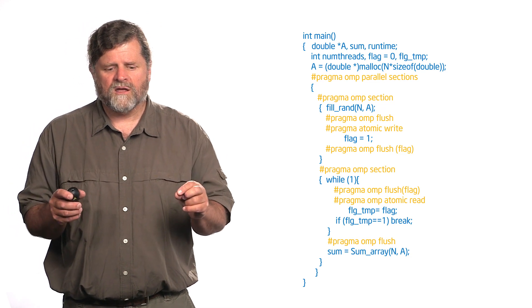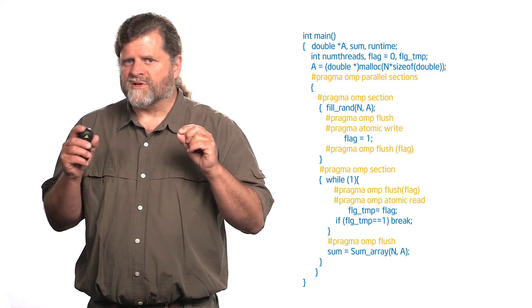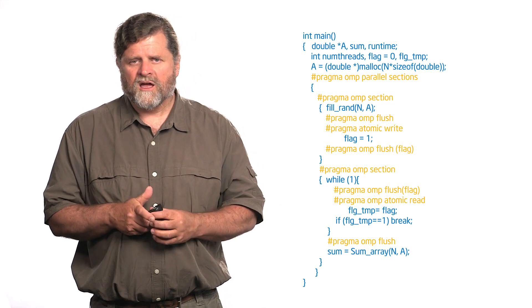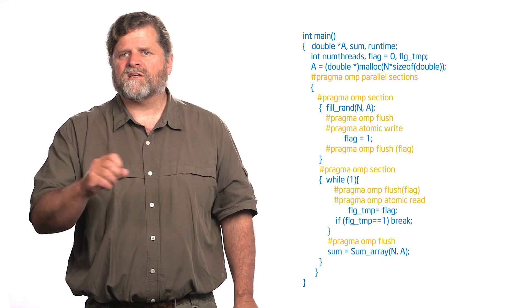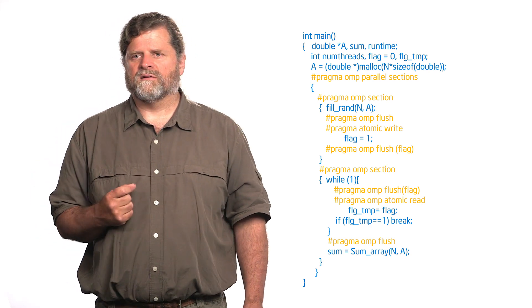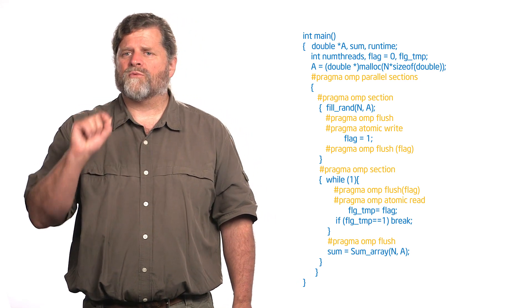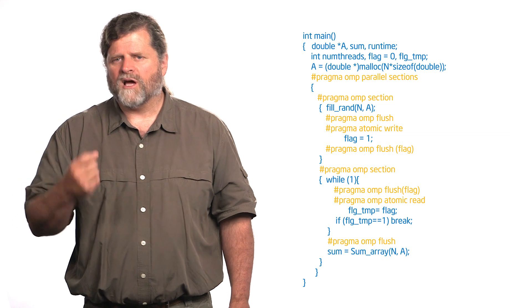Now let's start with the producer. I have the pragma omp flush because I've finished my production work. I've finished filling that array A. Now I'm going to do the atomic write of flag. I'm going to protect the write of the flag so it is impossible for anyone to see anything but the complete update to that flag. Then I flush the flag. So the only difference here is I added pragma atomic write so I do a safe complete update of flag.